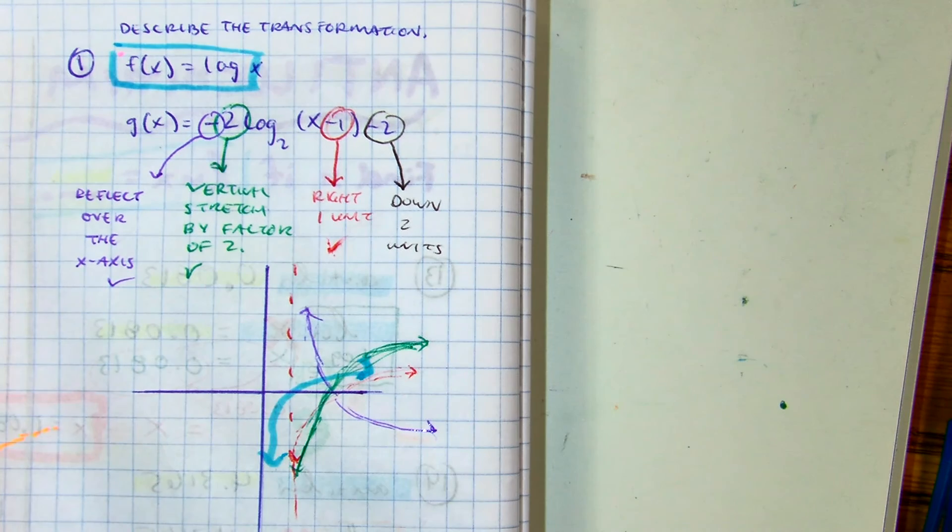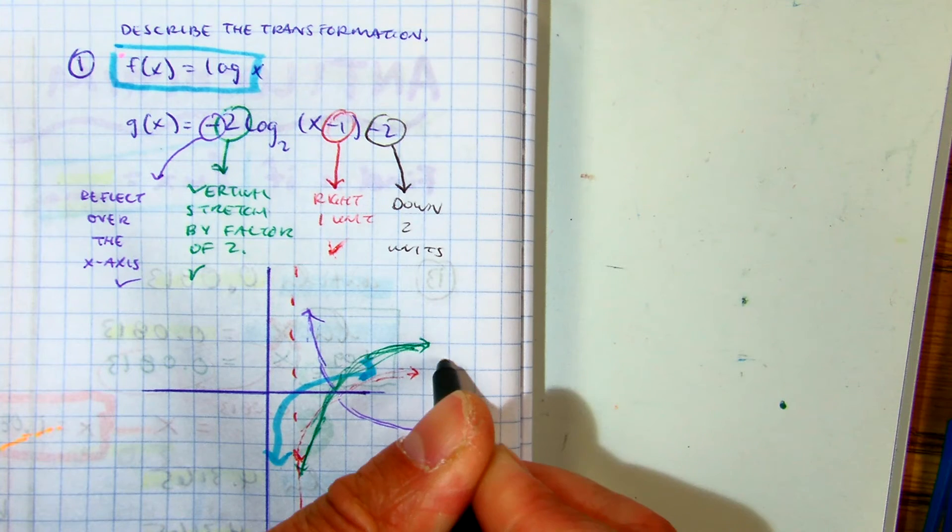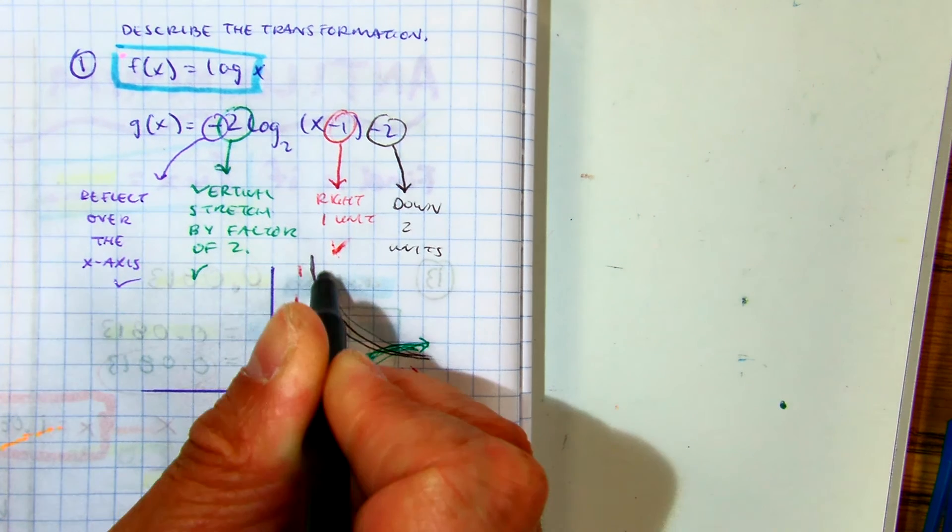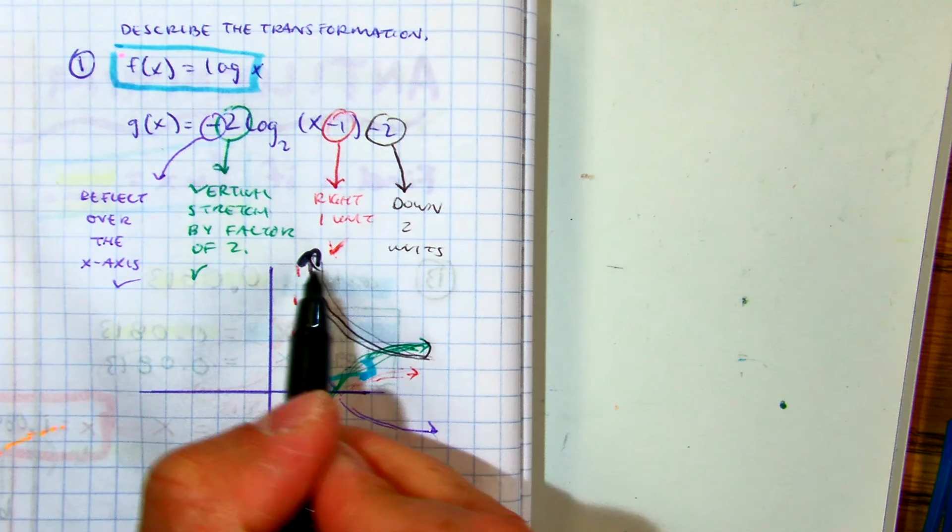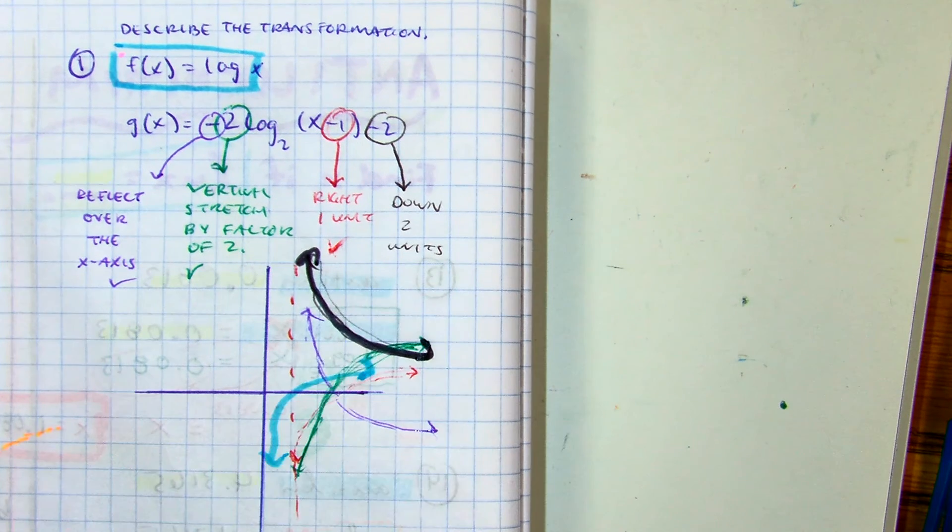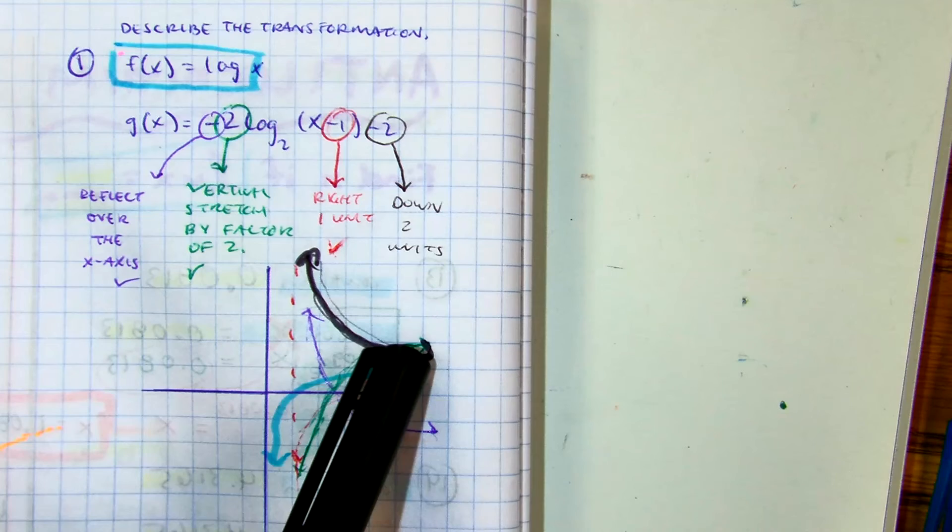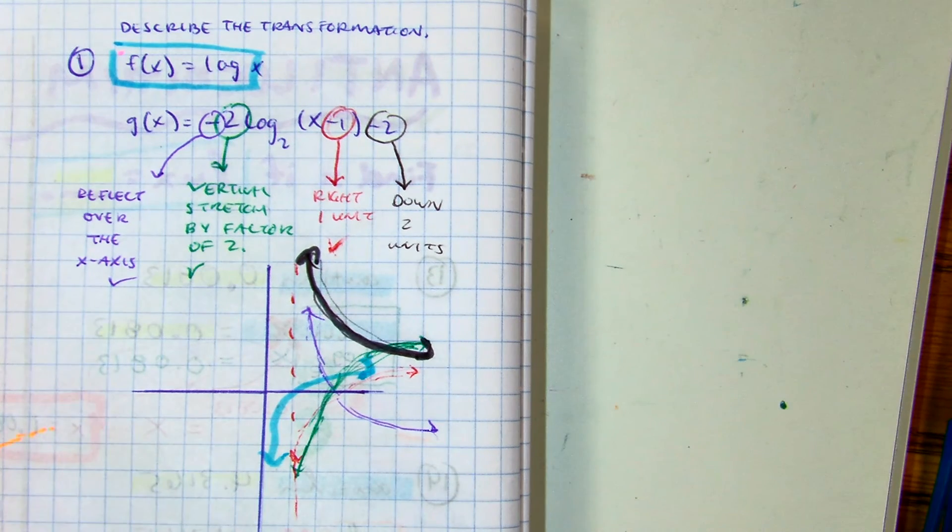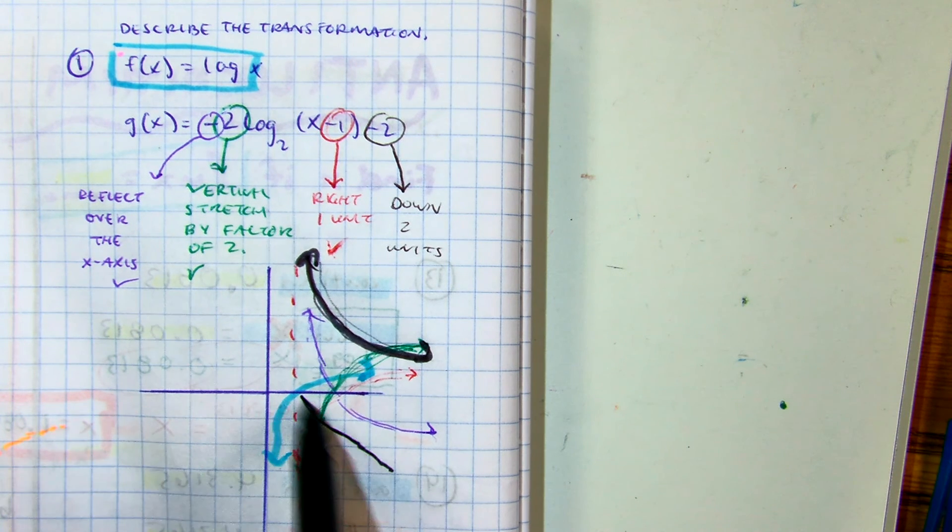And then you're going to move it up two units. Make that one extra thick. Down. Down? Yeah. Why did it go up? Good job, Jesse. So from there, something like that.